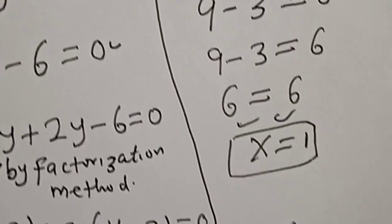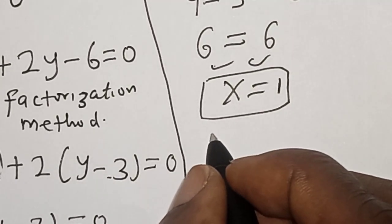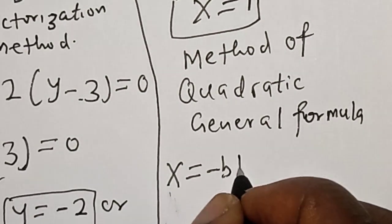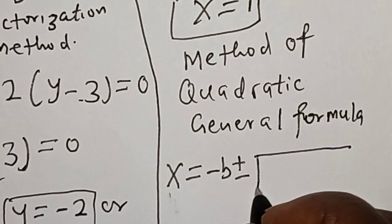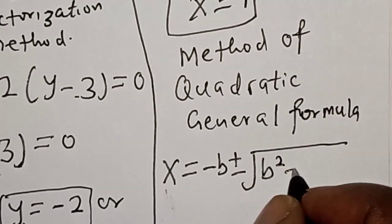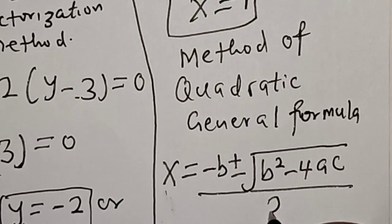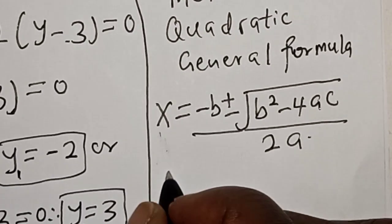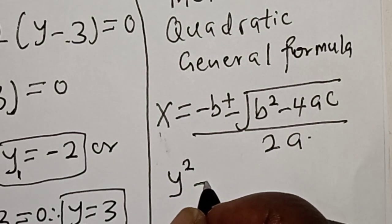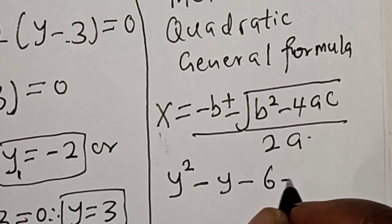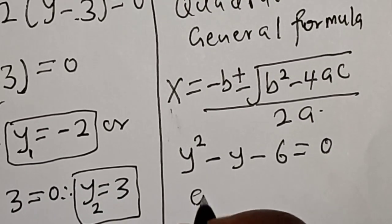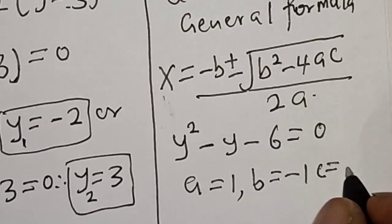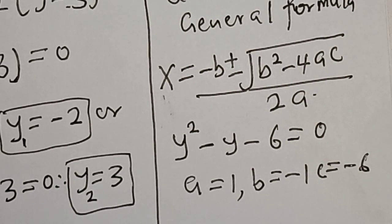Now let's solve this equation using the quadratic general formula. The quadratic formula is: y equals minus b plus or minus square root of b squared minus 4ac, all over 2a. From our equation y squared minus y minus 6 equals 0, we identify a equals 1, b equals minus 1, and c equals minus 6.